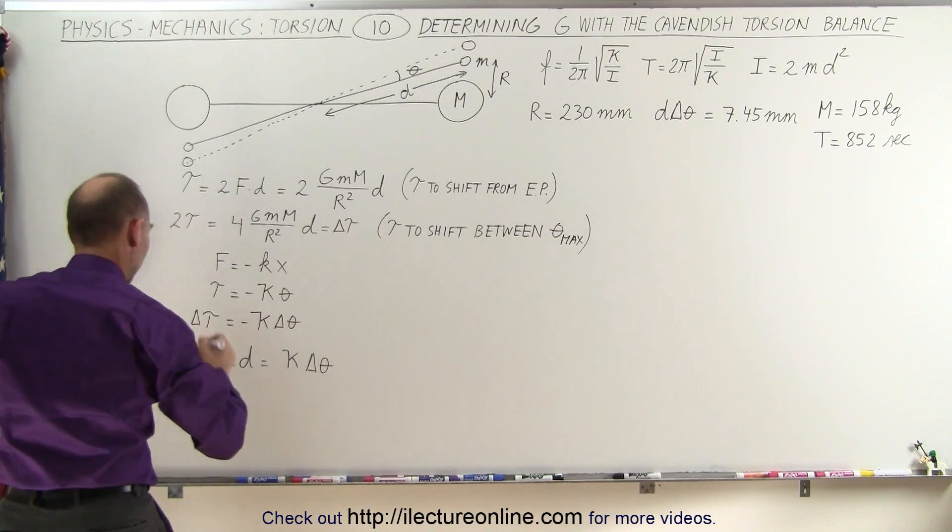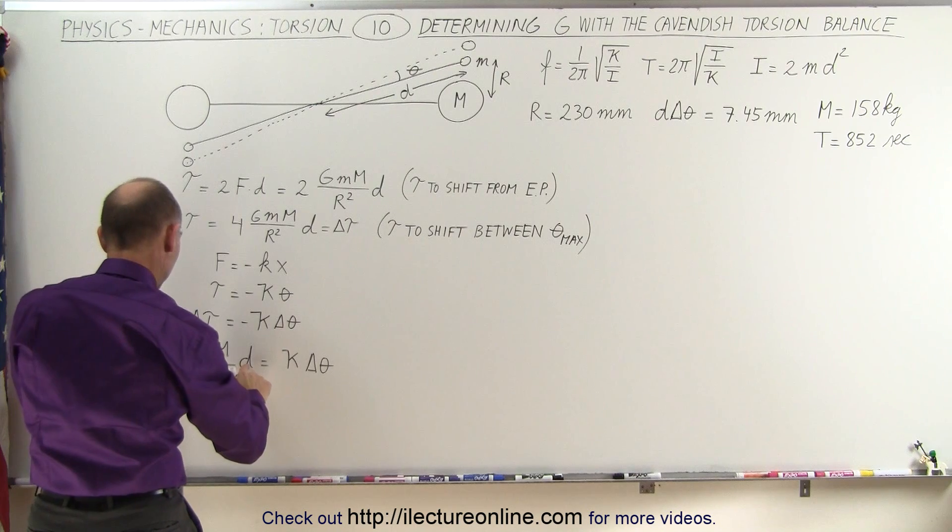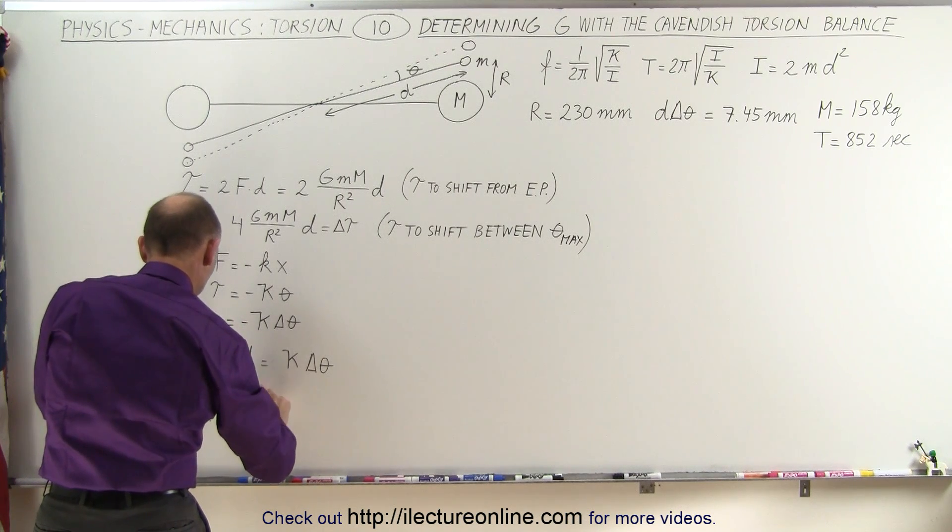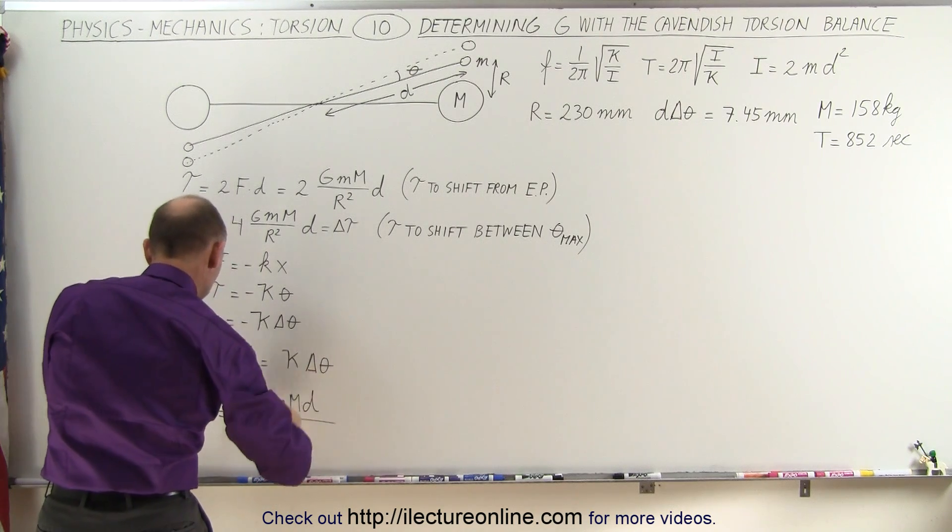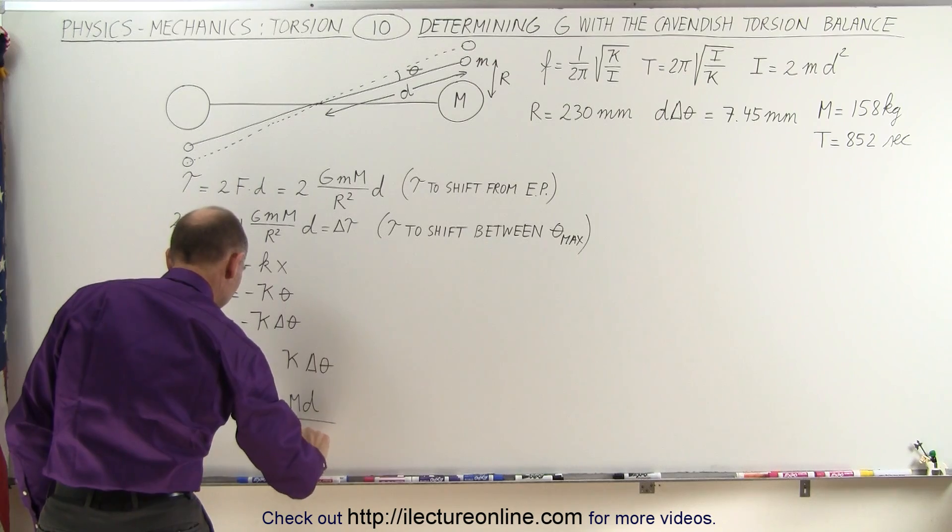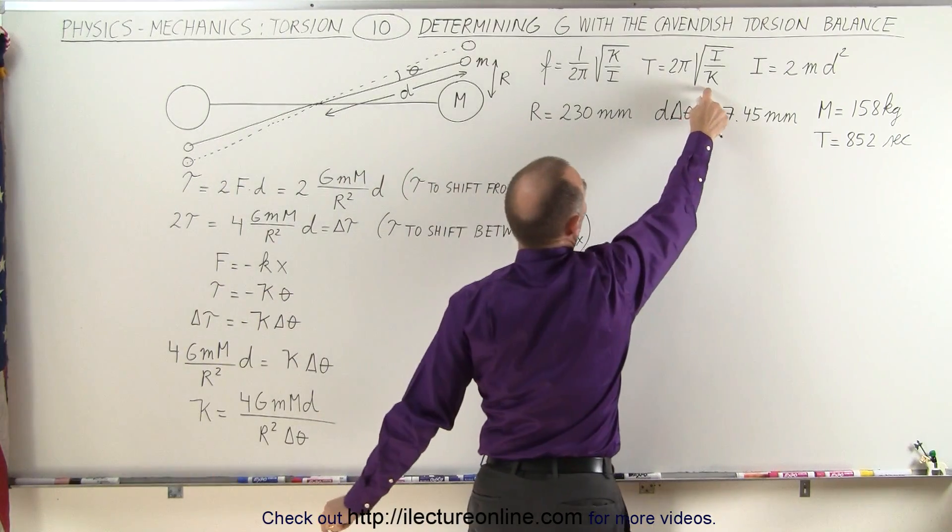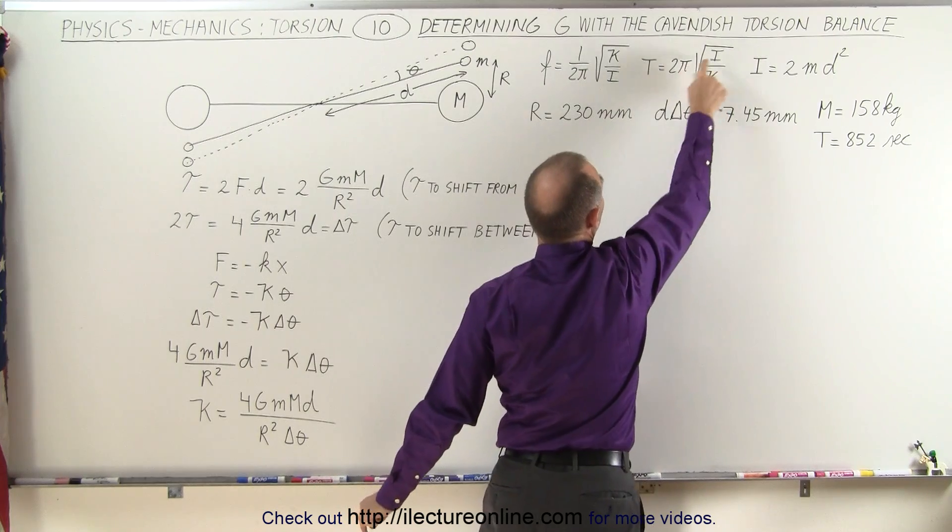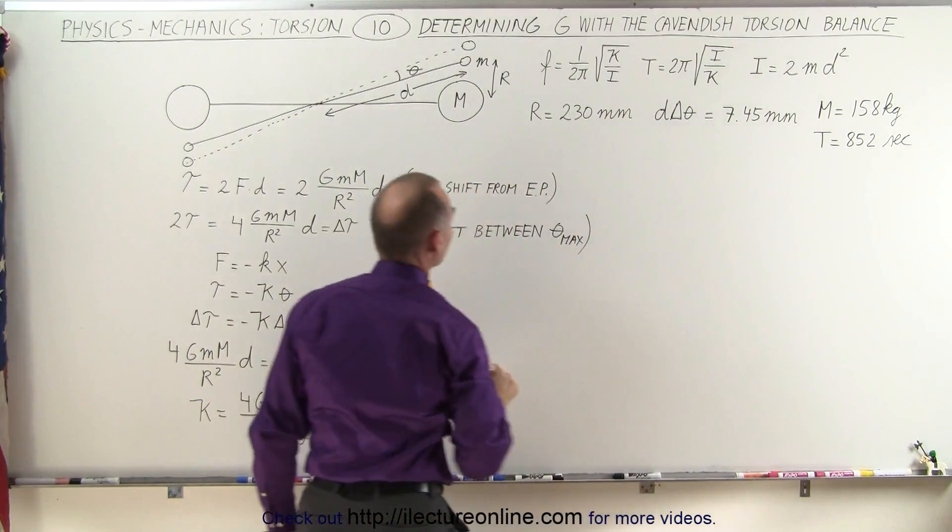Let's do that. Let's solve for Kappa. And so this tells us that Kappa is equal to, on the left side, we have 4GM big M times D divided by, on the denominator, R squared times delta theta. Now this can be plugged into this equation right here to solve for the period, and we can then replace I by what I is equal to.